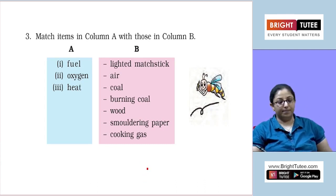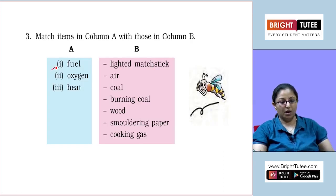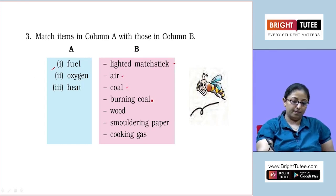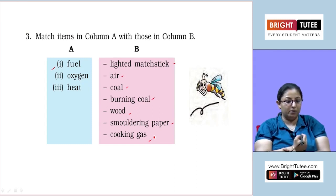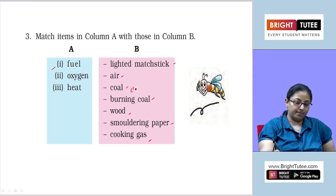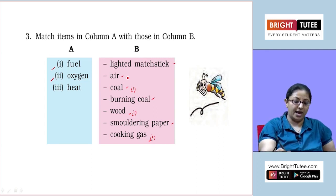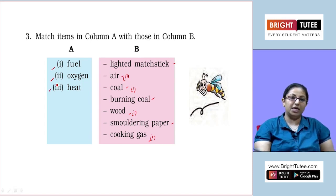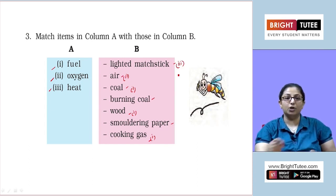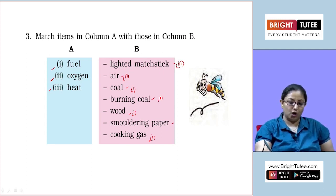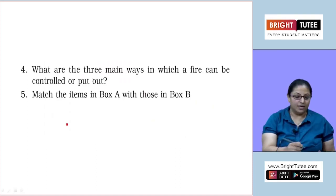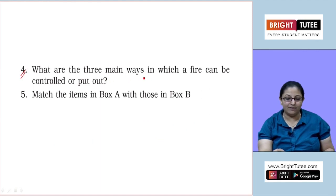Coming to the next part — match items in column A with column B. Fuel will match with coal, wood, and cooking gas. Oxygen will match with air. Heat will match with lighted matchstick. If you light the matchstick you will get heat — so lighted matchstick, burning coal, smoldering paper: with all these things, heat is attached.